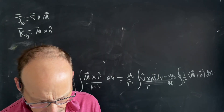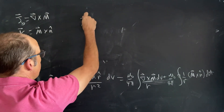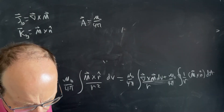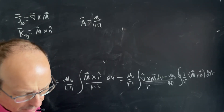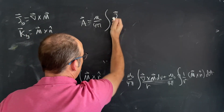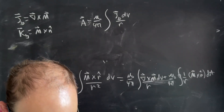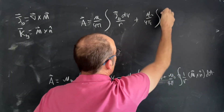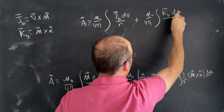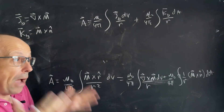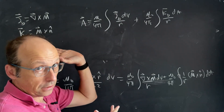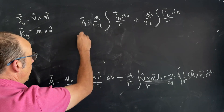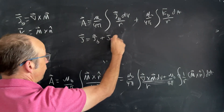Now I can write my vector potential — which I can use to find the magnetic field — as mu-naught over 4 pi times the integral of J-bound dV over R, plus mu-naught over 4 pi times the integral of K-bound dA over R. So I can break that into two bound current terms. The total current density J equals J-bound plus J-free.